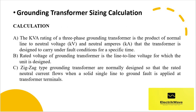Now let's see the calculation steps. (a) The kVA rating of a three-phase grounding transformer is a product of the normal line-to-neutral voltage (kV) and neutral amperes (kA) that the transformer is designed to carry under fault conditions for a specific time. (b) The rated voltage of the grounding transformer is the line-to-line voltage for which the unit is designed. (c) Zigzag type grounding transformers are normally designed so that the rated neutral current flows when a solid single line-to-ground fault is applied at the transformer terminals.